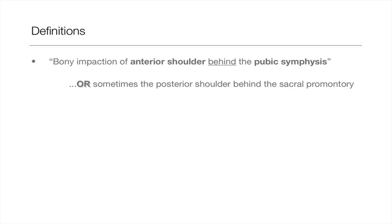Shoulder dystocia is one of the greatest obstetric emergencies. It occurs when there is the bony impaction of the anterior shoulder of the baby behind the pubic symphysis of the mother. Sometimes it can occur when the posterior shoulder of the baby gets stuck behind the sacral promontory of the mother.